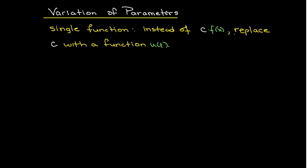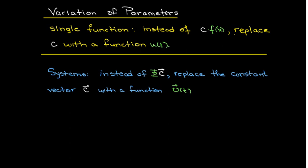Let's remember the variation of parameters. The idea is that instead of having a constant parameter, you have a varying parameter. In other words, instead of a constant times f(x) being a solution, you want a solution of the form u(t) times f(x). We'll do the same thing with systems: instead of having our fundamental matrix Phi times a constant vector, we'll replace the constant vector with a vector function u(t).